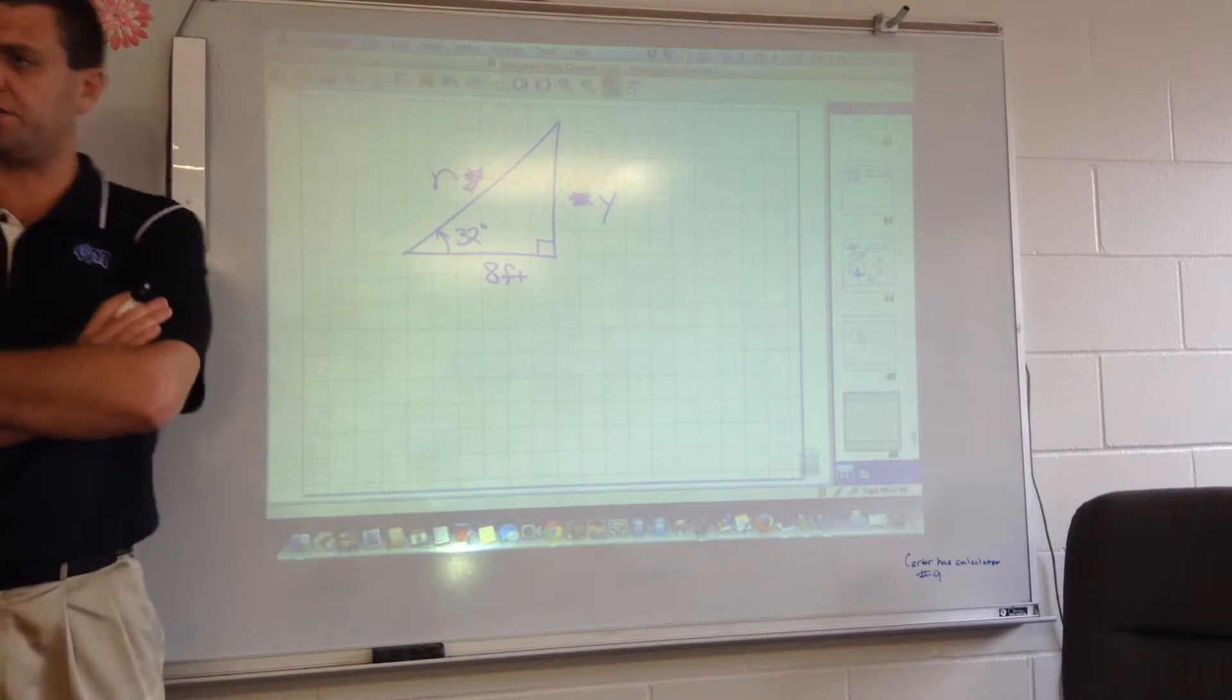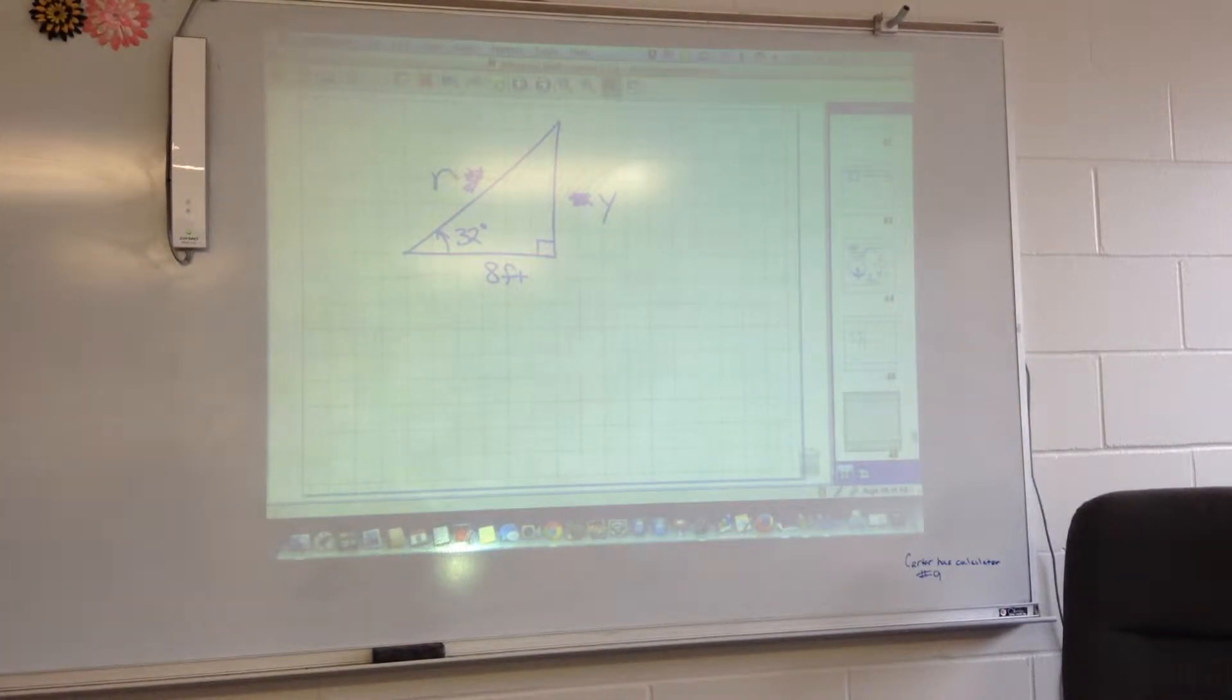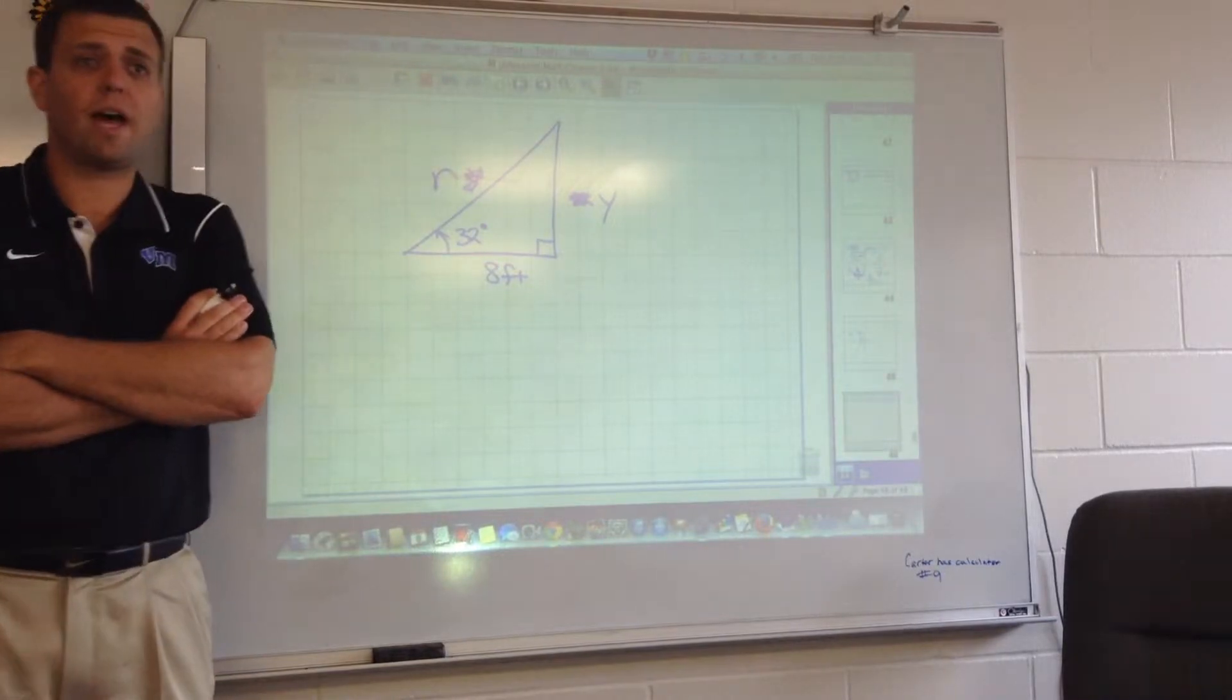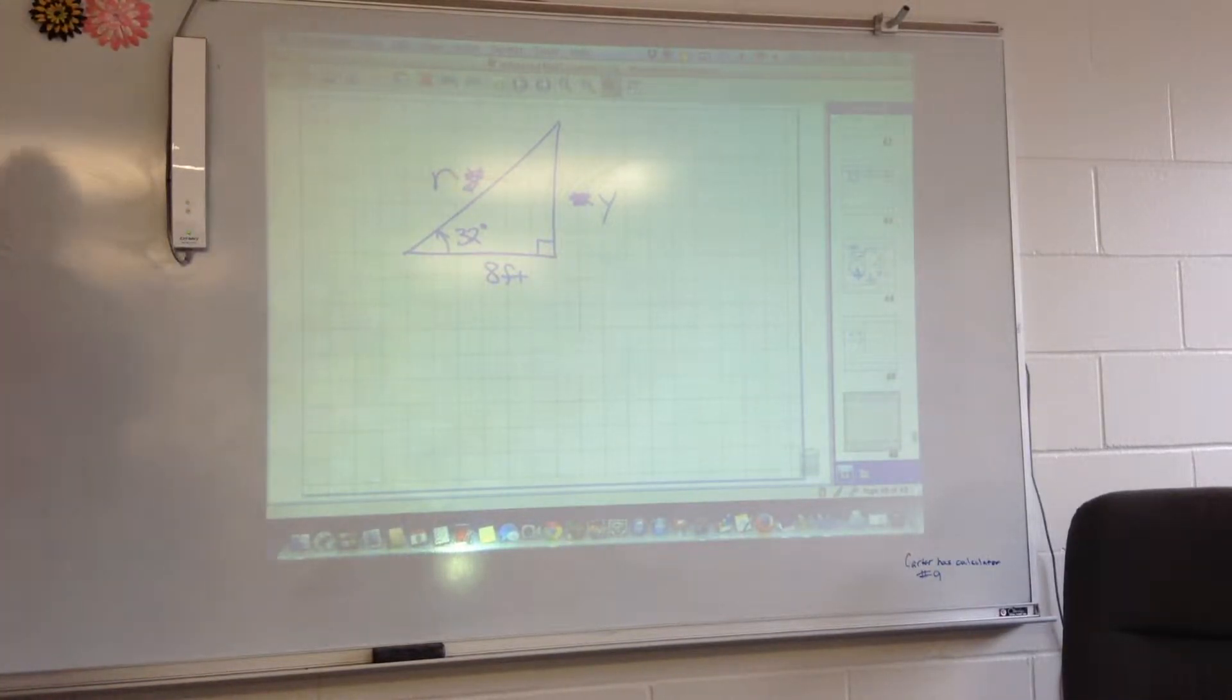Student: Can you use Pythagorean's theorem? Teacher: No, because you don't have two sides. If you have two sides, then you could use Pythagorean's to figure out the third. I probably wouldn't just because I'm feeling we're going to have decimals. I don't want to work with decimals.